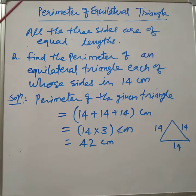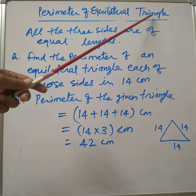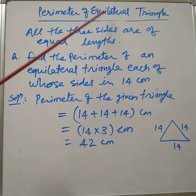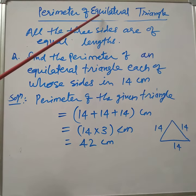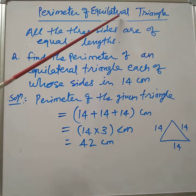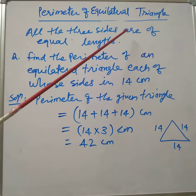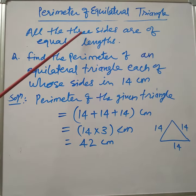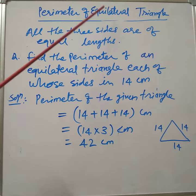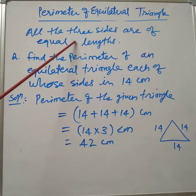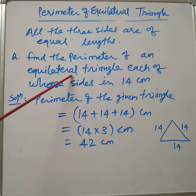Hello everyone, today we will learn how to find the perimeter of an equilateral triangle. Which triangle is called an equilateral triangle? 'Equi' means same, 'lateral' means side. So, when all three sides are of equal length, that triangle is called an equilateral triangle. If the measurement of one side is given, we can find out the perimeter of the given equilateral triangle.